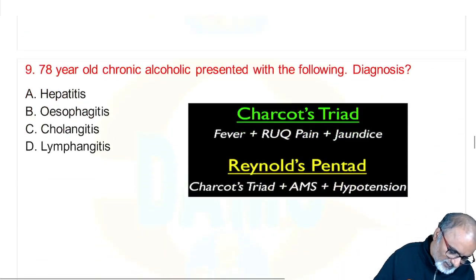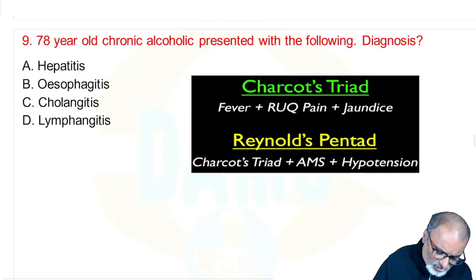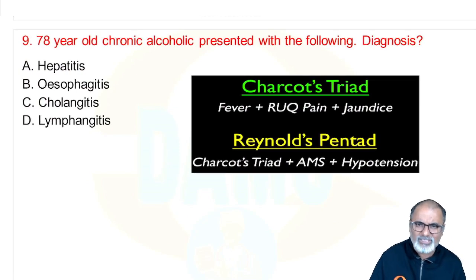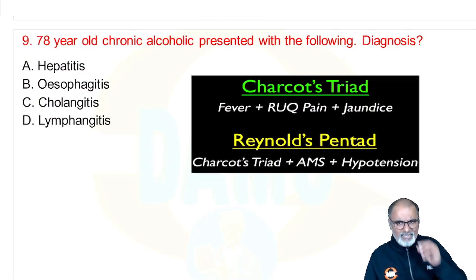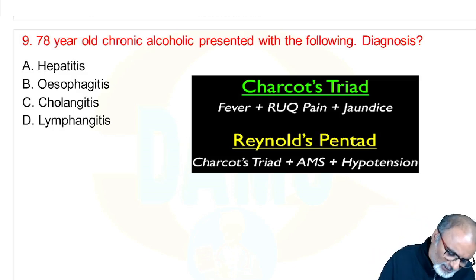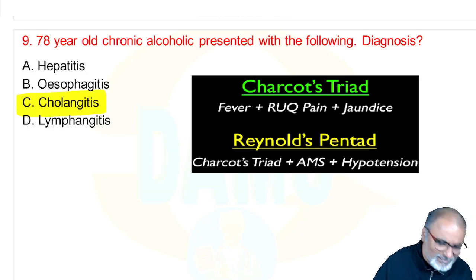Next: a 78-year-old chronic alcoholic presents with the following. Fever, right upper quadrant pain, and jaundice is Charcot's triad; add AMS and hypotension for Reynolds pentad. Think of cholangitis — it is a case of cholangitis.